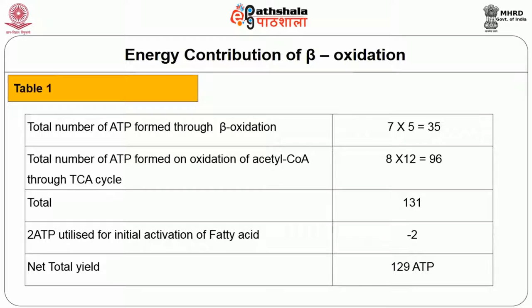The energy contribution of beta oxidation: palmitic acid, a 16-carbon fatty acid, undergoes 7 cycles and produces 8 molecules of acetyl-CoA. Each beta oxidation cycle produces 5 ATP, so total ATP from beta oxidation is 7 × 5 = 35. Total ATP formed on oxidation of acetyl-CoA through the TCA cycle is 8 × 12 = 96. Total is 131 ATPs. Minus 2 ATPs utilized for initial activation of the fatty acid gives a net total of 129 ATPs produced on beta oxidation of palmitate.